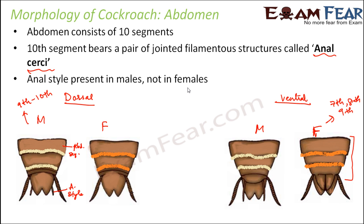The important features of the abdomen are its well-segmented parts and the presence of genital organs — both male and female sex organs. We will discuss their structure in more detail when we cover the reproductive system of the cockroach.